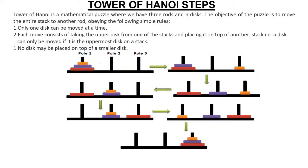In the first step, we move the disk from pole one to pole three. In the second step, we move the second disk from pole one to pole two. In the third step, we move the disk from pole three to pole two.